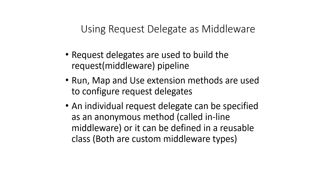These reusable classes and inline anonymous methods are middleware, also called middleware components. Each middleware component in the request pipeline is responsible for invoking the next component in the pipeline, or short-circuiting the pipeline. When a middleware short-circuits, it's called terminal middleware, because it prevents further middleware from processing the request. The simplest possible ASP.NET Core app sets a single request delegate that handles all requests — a single anonymous function called in response to every HTTP request.